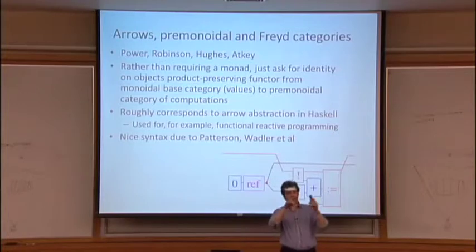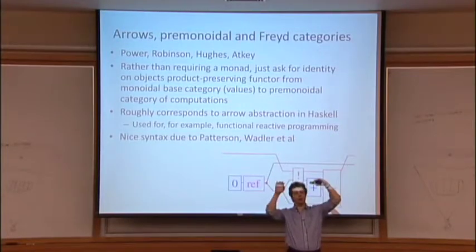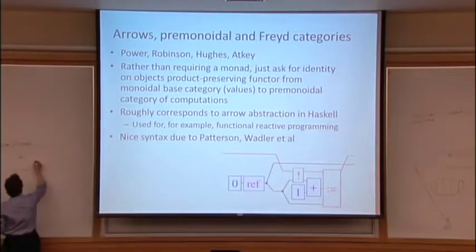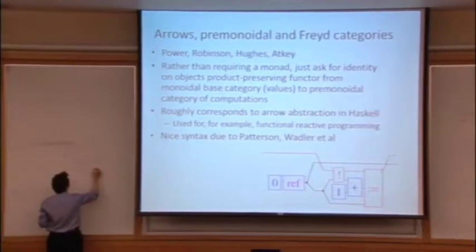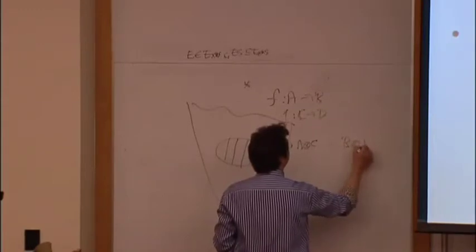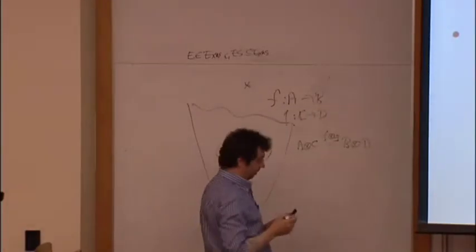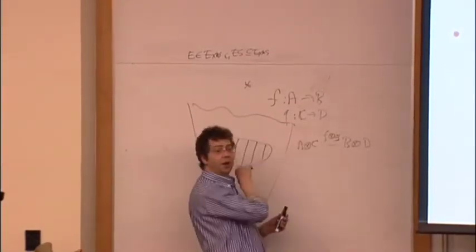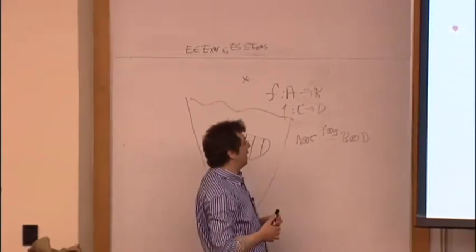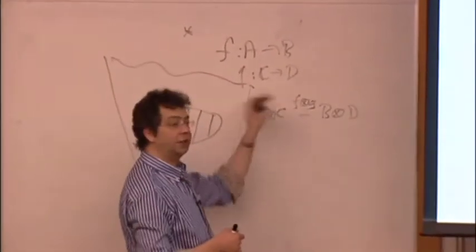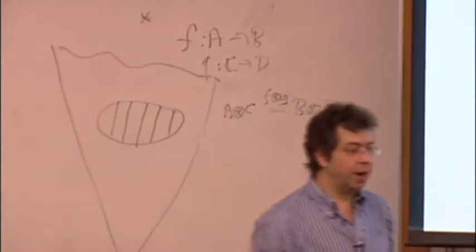The structure you get is a symmetric monoidal base category with a pre-monoidal category of computations and an identity-on-objects functor taking the product below to the product above. Pre-monoidal means that although there's a product for any two objects in the category of computations, you don't require it to be a functor — only a bifunctor, a functor in each variable separately. This is the situation with a non-commutative monad: given computations F from A to B and G from C to D, there's no sensible notion of tensoring F and G together, because each has side effects and the order in which those side effects happen matters. So you get two ways of combining F and G — one where F happens first and one where G happens first — and they're not generally equal, though they are equal if the monad is commutative.